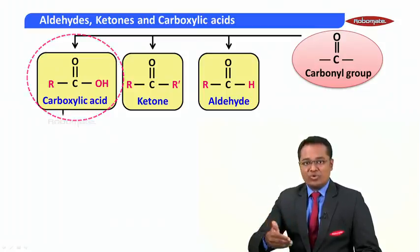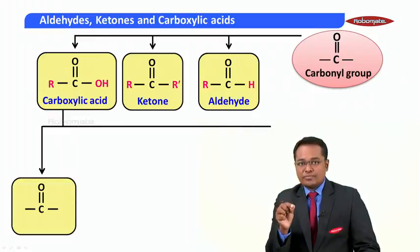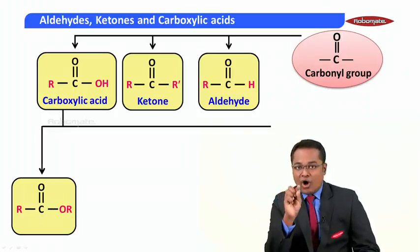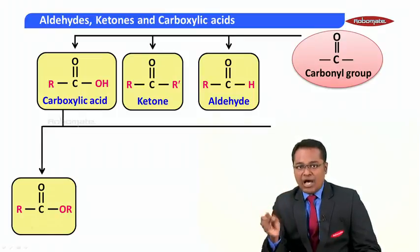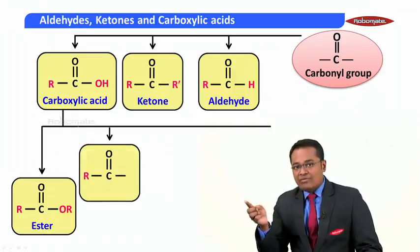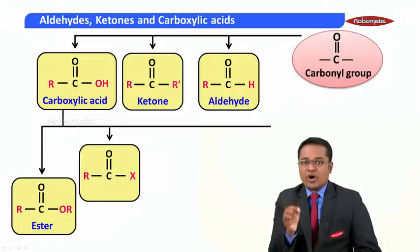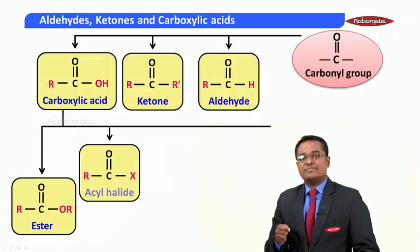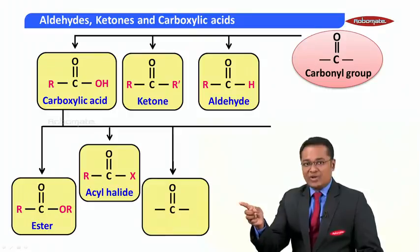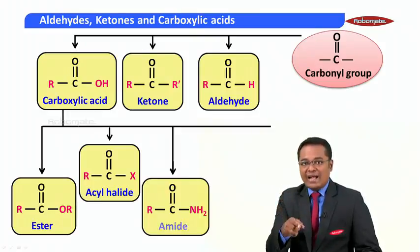In the first acid derivative, one side has an alkyl group and the other side has an OR group, called an alkoxy group — these are called esters. Similarly, if one side has an alkyl group and the other side has a halogen X, these are called acyl halides. In the next one, one side has an alkyl group and the other side has an NH2 group, which is an amine group — these are called amides.